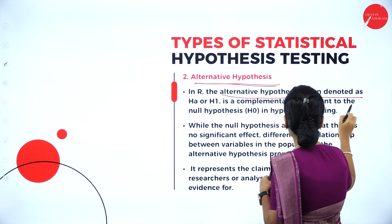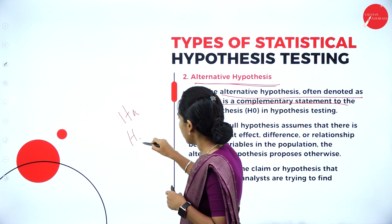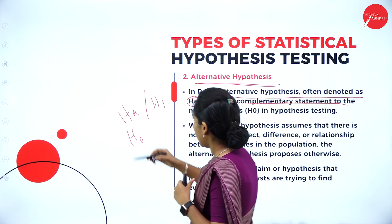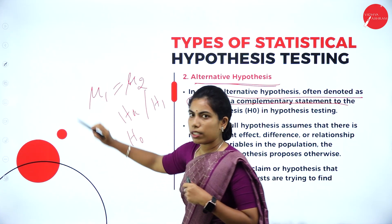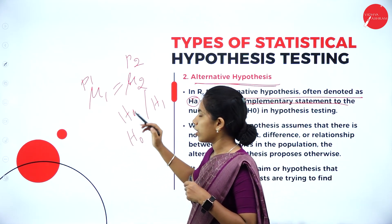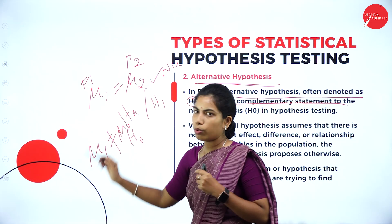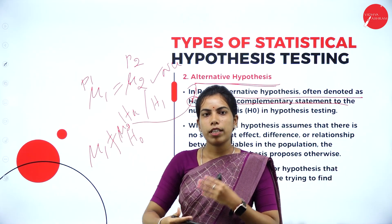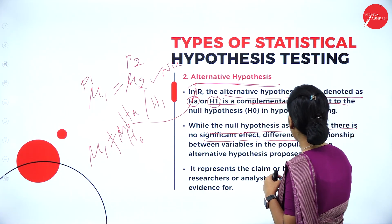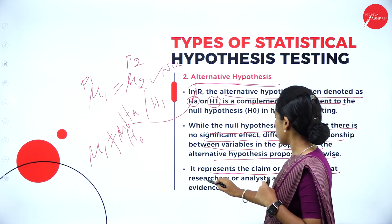HA stands for alternative hypothesis. H₀ is the null hypothesis and H1 is the alternative hypothesis. If the means of two samples (population 1 and population 2) are equal or show no difference, it belongs to the null hypothesis. If mean 1 is not equal to mean 2, it belongs to the alternative hypothesis. While the null hypothesis assumes no significant effect or relationship, the alternative hypothesis proposes a difference and represents the researcher's claim.